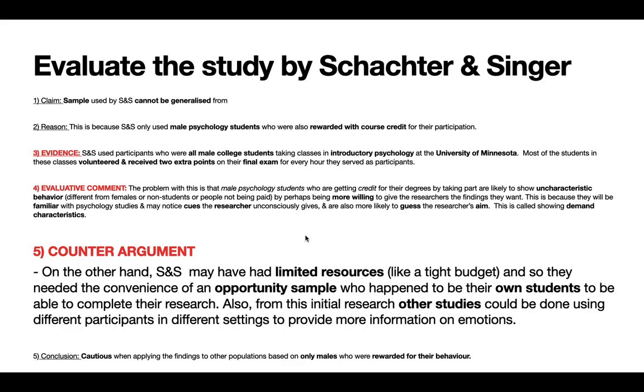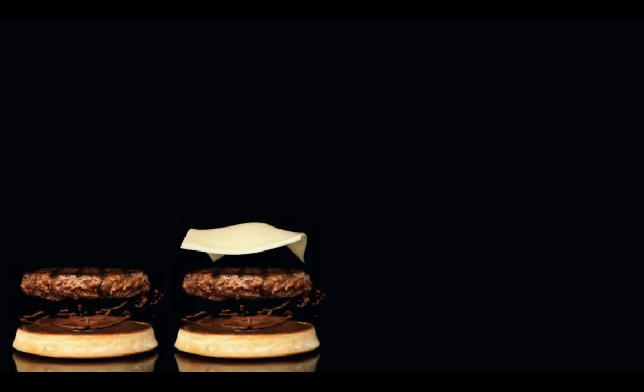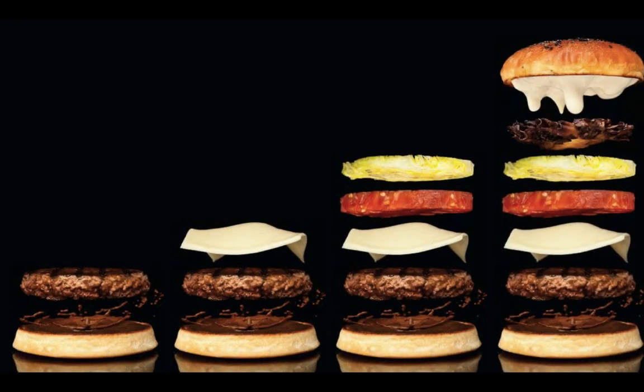Now, does that mean you have to follow this exact methodology? No. You could just have claim, reason, counter-argument, and conclusion — that's absolutely up to you. It's really up to you to decide how you want to answer your question paper. Sometimes it's hard to come up with an evaluative comment, so you can just go straight from evidence to counter-argument — that's perfectly fine. Start small, build it up, and add all your points. You can also use the P-E-E-L method from my previous videos; that carries over to A2 level as well.